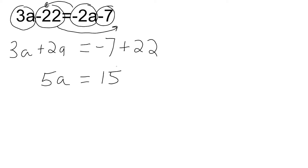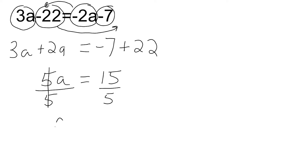We can see that a must be 3 because 5 times 3 is the only thing that will produce 15. But to show the work to its completion, we divide the coefficient by itself and divide the constant on the other side by 5. That leaves us with a is equal to 3.